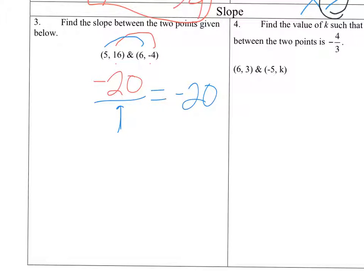If you prefer using the slope formula, y2 minus y1 over x2 minus x1. So we've got negative 4 minus 16 over 6 minus 5, which is negative 20.